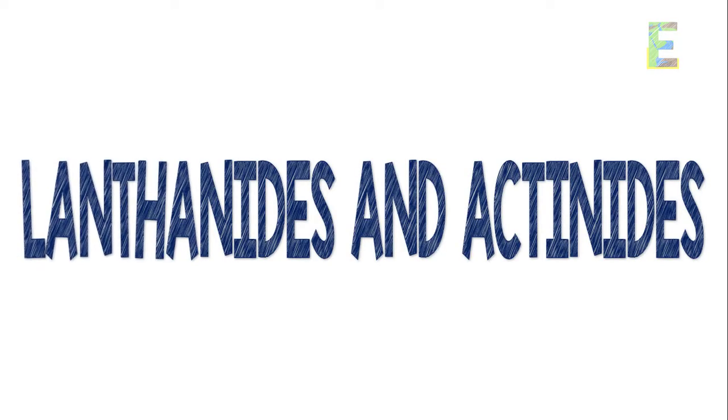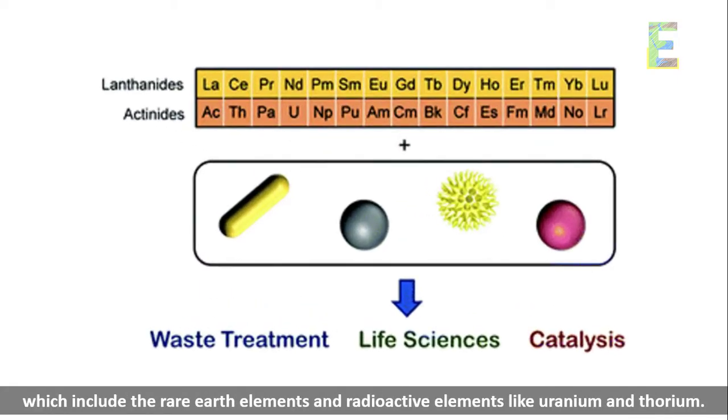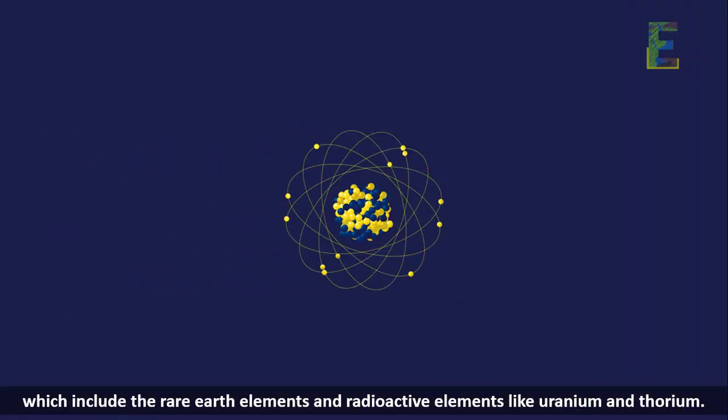Lanthanides and actinides. Below the main table, we find the lanthanides and actinides series, which include the rare earth elements and radioactive elements like uranium and thorium.